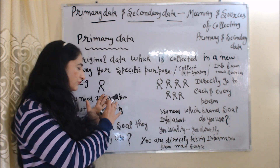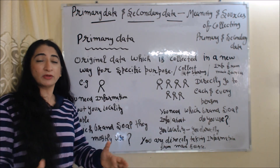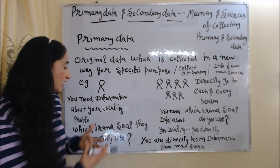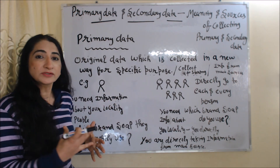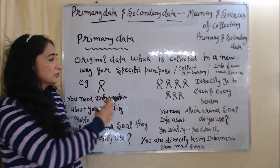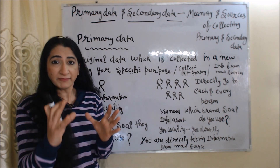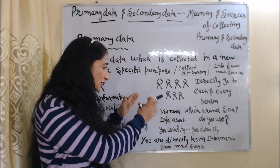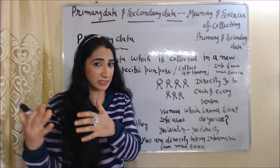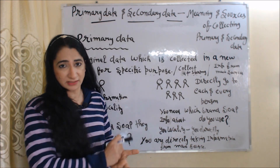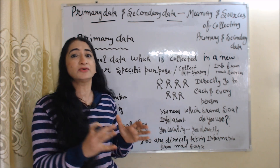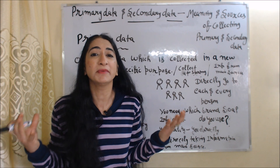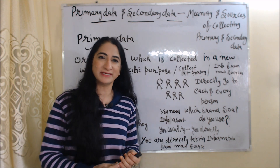For example, you need information about your locality people — you want to collect data about which brand of soap they mostly use — and you directly go to each and every person and ask them which brand soap they use. Here you are collecting your data in a new way, starting from the main source. So it is called primary data.